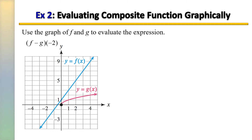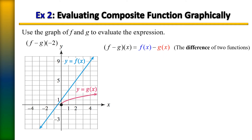In this example we're asked to use the graph of function f and g to evaluate the expression f minus g of negative two. We're going to find the value of f of negative two and g of negative two, then subtract those two functions. Starting with the f of x function, indicated by the blue graph — f of negative two: go over to negative two on the x-axis. To get on the graph we have to move down one, two, three. So therefore f of negative two equals negative three.